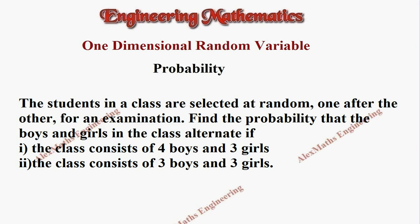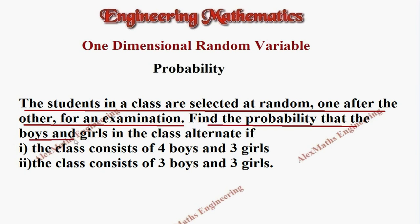Hi students, this is Alex. In this problem, they have given that the students in a class are selected at random, one after the other, for an examination. You have to find the probability that the boys and girls in the class alternate.